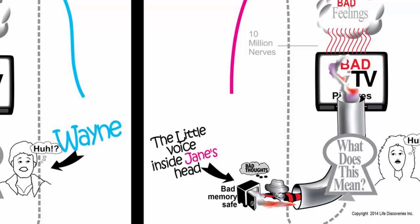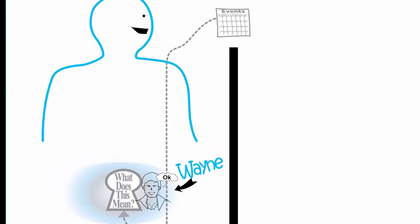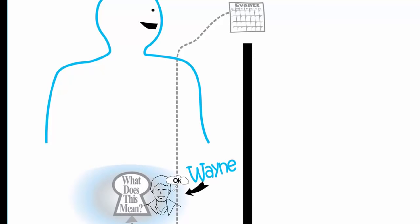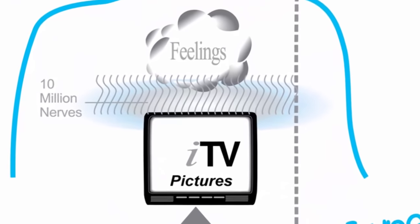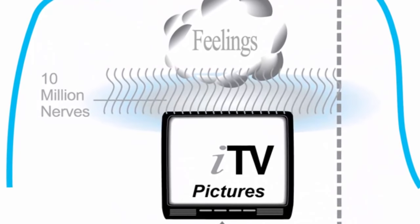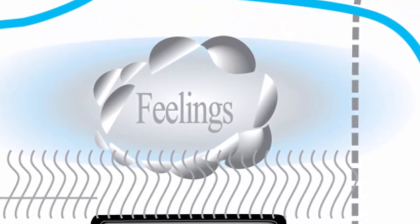But let's imagine that Wayne decided the meaning of events instead of the little voice inside his head. What if Wayne was free to make every event mean something good? And what if Wayne created on his own ITV a movie about a good meaning he decided about Jane's behavior? And then Wayne's nervous system would do what it always does and be convinced that Wayne's ITV movie is real. That would create good feelings for Wayne.